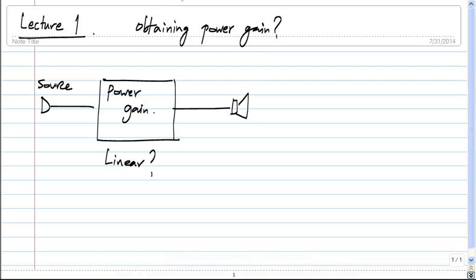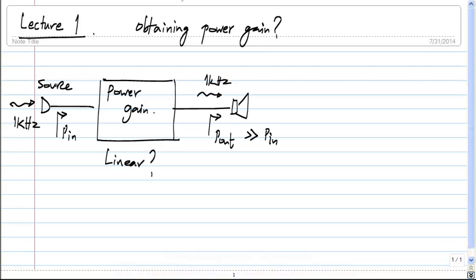Nothing can produce power by itself — you have to put power into it. So the meaning of power gain is that: let's say I have my voice as a 1 kilohertz signal. Of course it's not a single sinusoid, it's a complex spectrum, and this is also the same signal at 1 kilohertz, but the power that comes out is much more than the power that went into the amplifier. That's the meaning of having power gain.